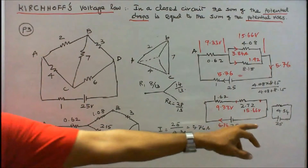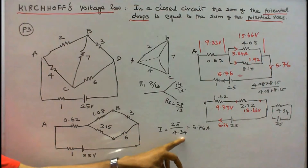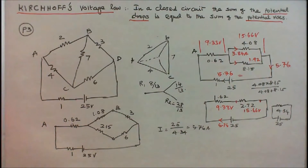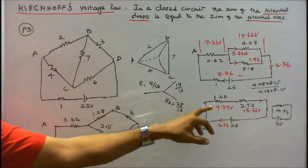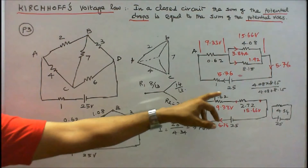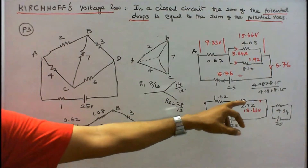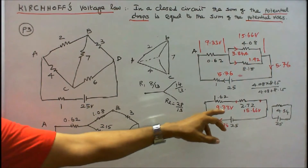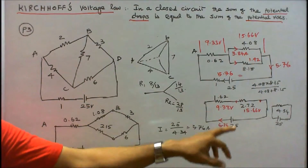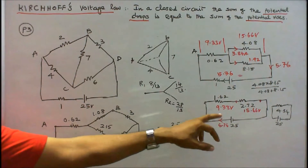I know the voltage: 25 volts. I = V/R = 25 / 4.34 = 5.76 amps. The current flow through the 1 ohm resistor is 5.76 amps. The voltage drop in the 1.62 ohm resistor is 9.33 volts, and in the 2.72 ohm resistor is 15.66 volts. So 9.33 + 15.66 = 24.99, which is almost 25 volts. Kirchhoff's Voltage Law is verified.